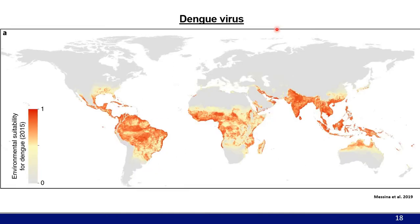Dengue fever is a huge problem in tropical and subtropical areas across the world. This map shows which areas are at risk for dengue virus infections, based on suitable climate for the vector mosquitoes Aedes aegypti and Aedes albopictus. There are regular outbreaks across South and Central America, Southeast Asia, and Africa, with only occasional cases in Florida, Texas, and parts of the Mediterranean region.